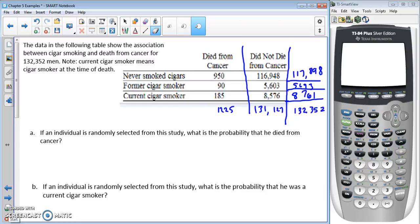The data in the following table shows the association between cigar smoking and death from cancer for 132,352 men. Current cigar smoker means cigar smoker at the time of death. The original table didn't give us the totals, so I went ahead and found the totals across the bottom and down the side. The total at the very bottom matches the total over here, which is good. That means we totaled up everything correctly.